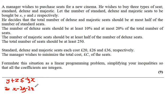All I've done there is taken everything onto one side and made the coefficients integers, as we're told to do so in the question. The next part says the number of deluxe seats should be at least 10% of the total number of seats. The total number of seats is x plus y plus z, so the number of deluxe seats is at least 10% of that total.